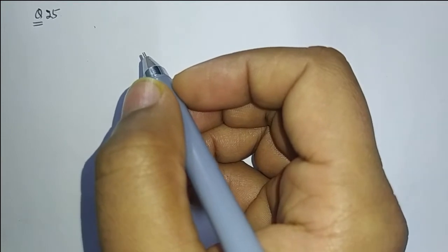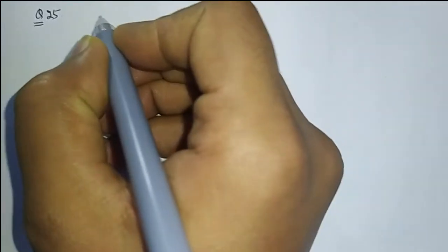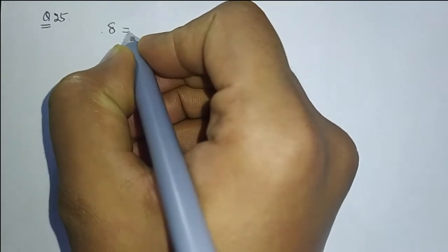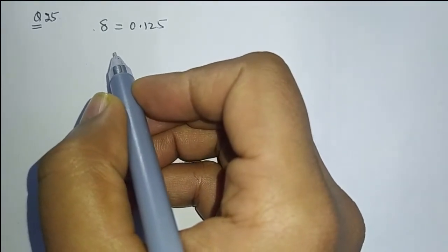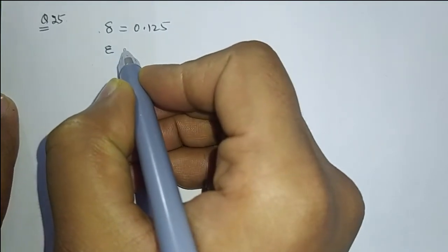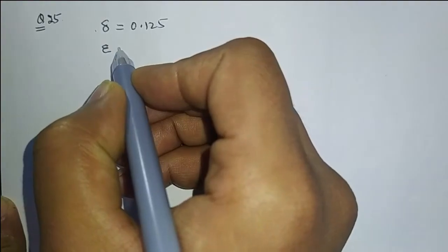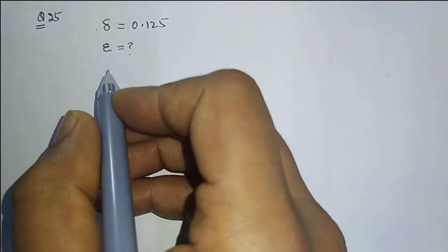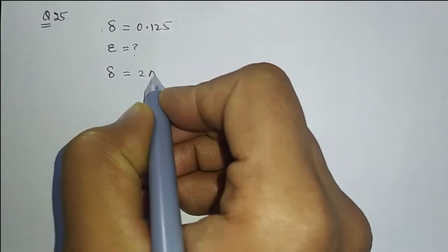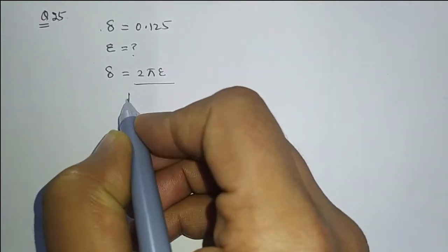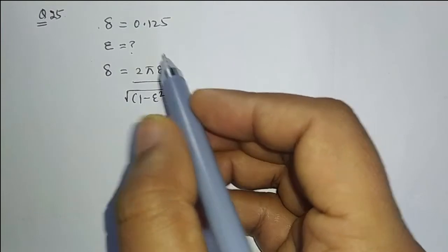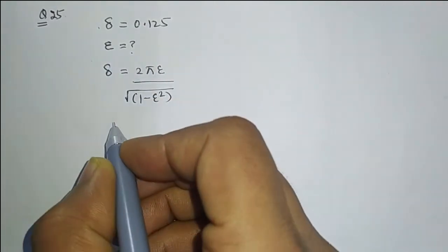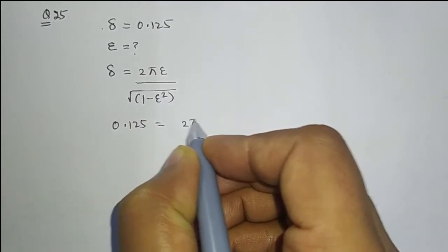Question number 25: The logarithmic decrement measured for a viscously damped single degree of freedom system is given as Delta = 0.125. We have to find the value of the damping factor in percentage. The formula for logarithmic decrement is 2πζ divided by the square root of (1 minus ζ²), where ζ is the damping ratio. Setting 0.125 equal to 2πζ over the square root of (1 − ζ²).